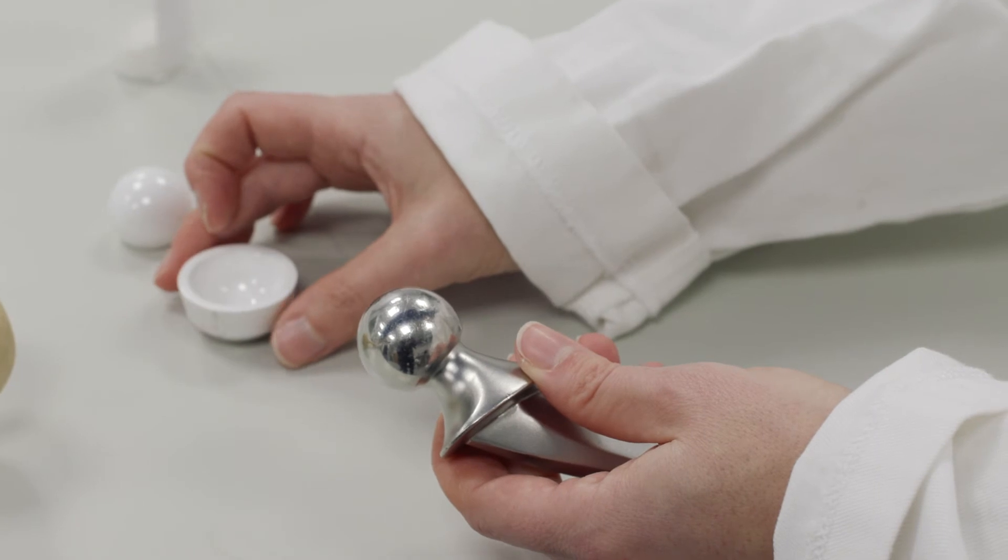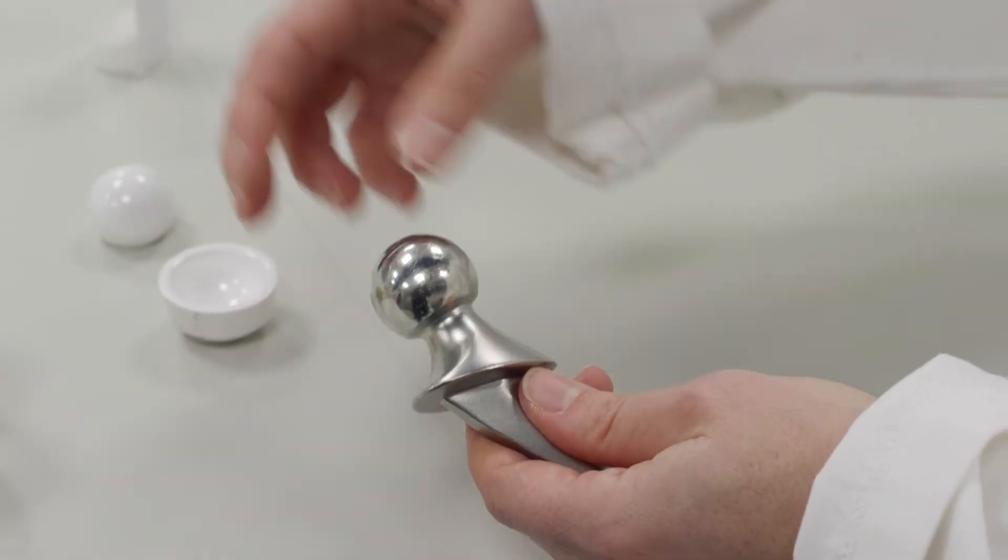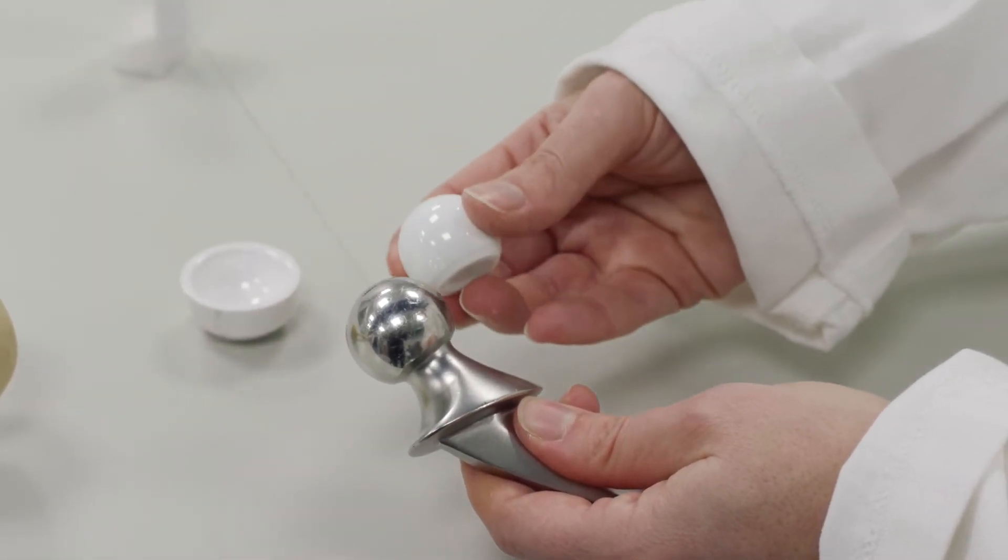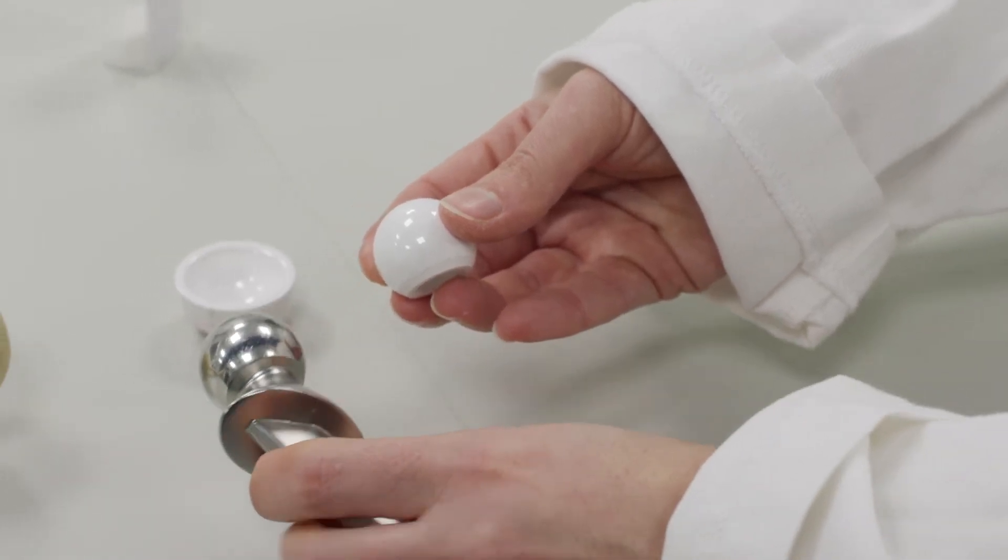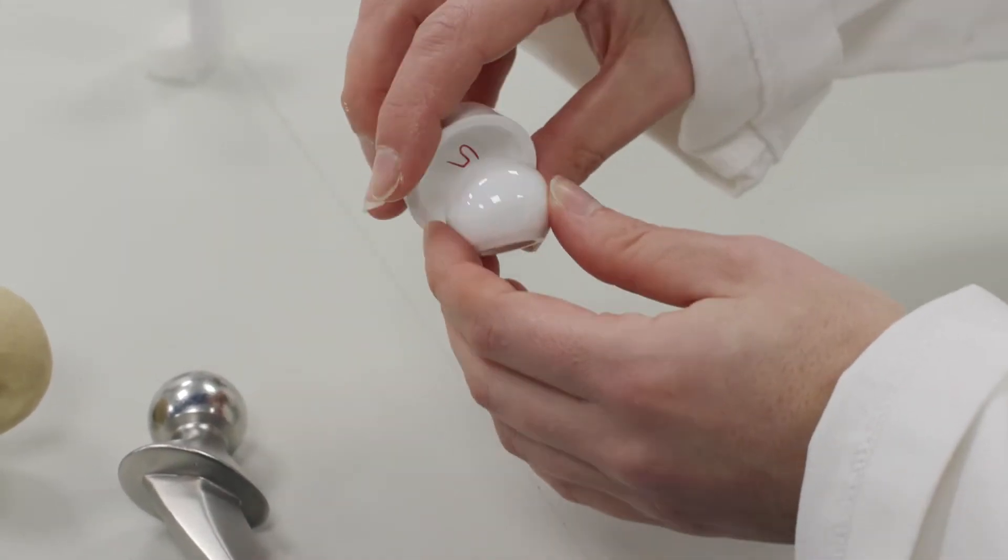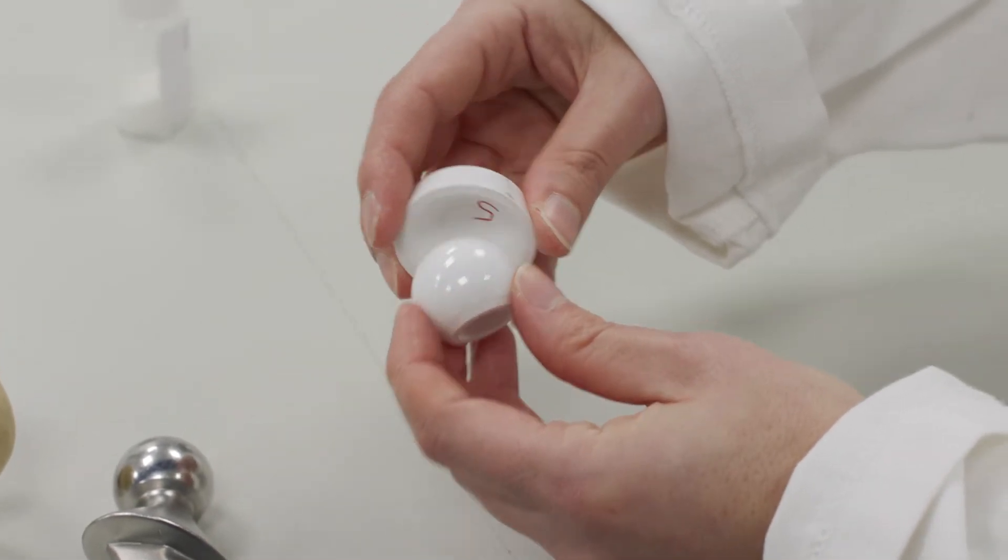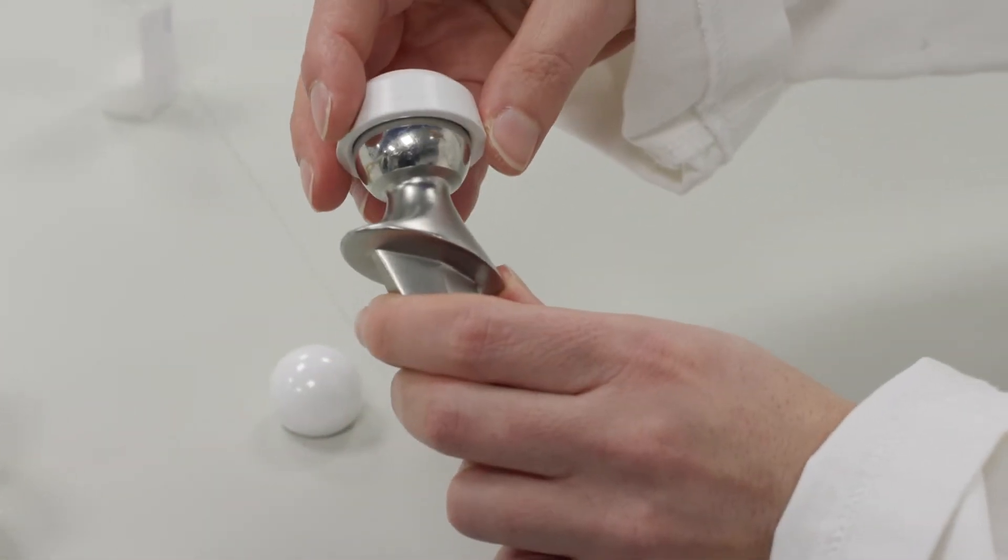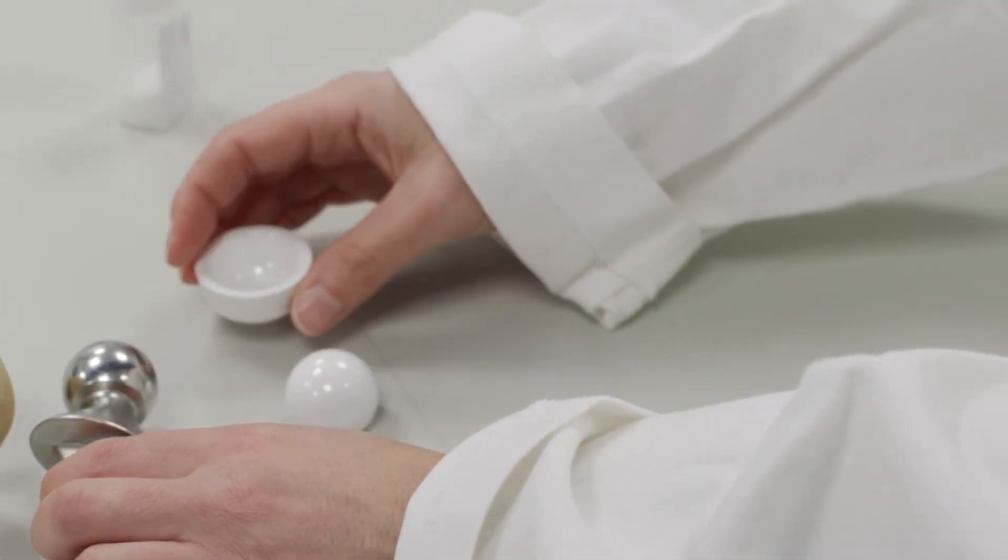You can replace the metallic ball with the ceramic one, like this one. And you can have two types of implants: one is ceramic on ceramic, and the other one is ceramic on metal. Of course, the properties of the two types of implants are different.